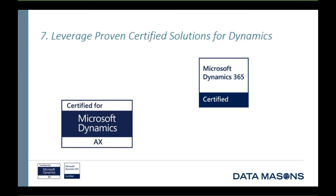Best practice number seven: look for Microsoft-certified solutions. Microsoft knows that many organizations have invested in solutions surrounding their products that aren't necessarily following best practices. A number of years ago they implemented a program to certify solutions as following best practices — a very rigorous testing process requiring references, validating that solutions did work, and that companies could progress with those solutions in place. This is the Certified for Microsoft Dynamics program. Look for solutions that hold those certifications as a first choice to keep you aligned with best practice.